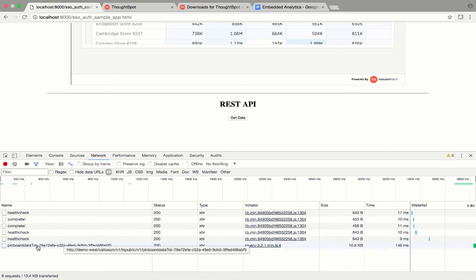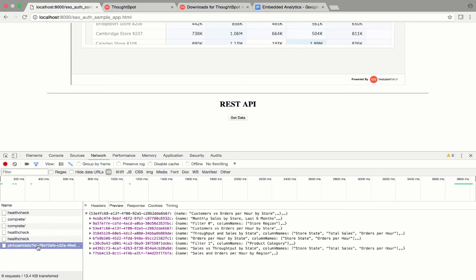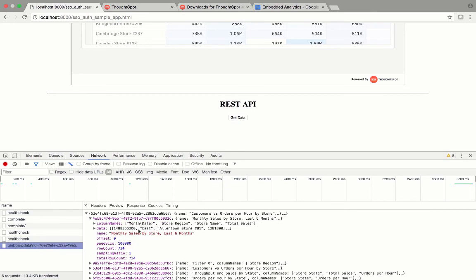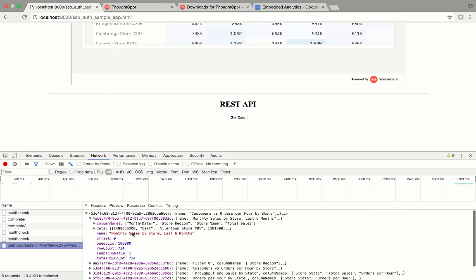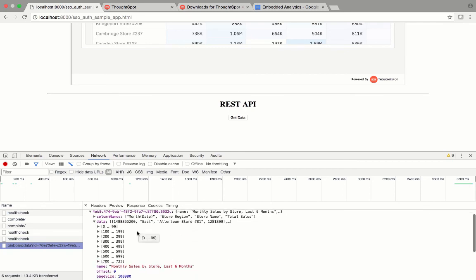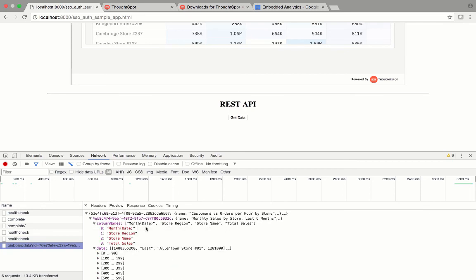And here you can see this tspublic slash v1 slash pinboard data. I can click on that and it'll show me all the data that I retrieved. So, in this case, each of these identifiers represents a unique visualization. And I can see the data in each visualization and the column headers in each visualization.